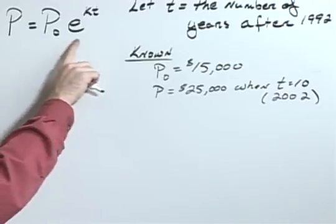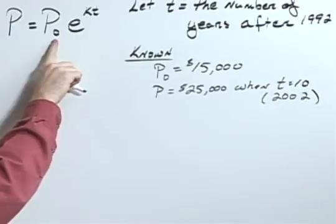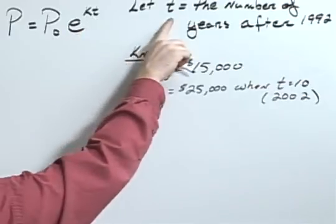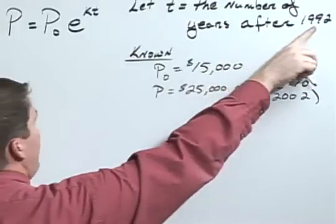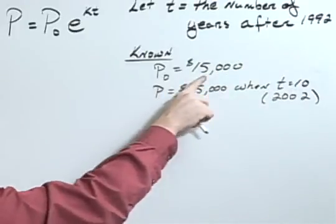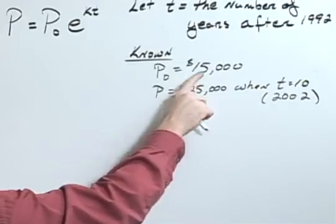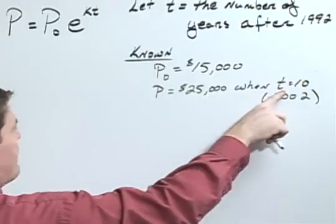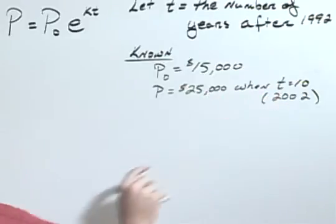I've written the exponential growth equation p equals p sub zero e to the kt, and we can let t equal the number of years after 1992. We also know that our initial purchase price was $15,000 and that it has a value of $25,000 after 10 years or 2002.